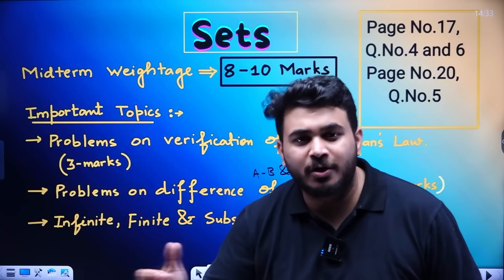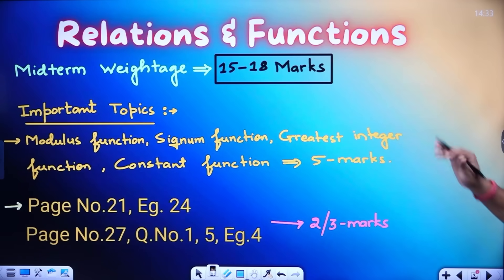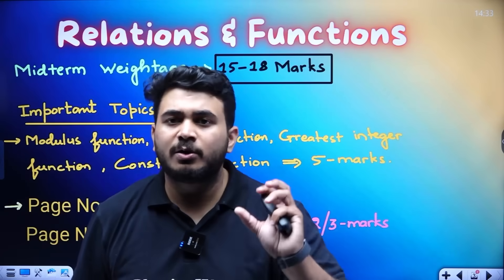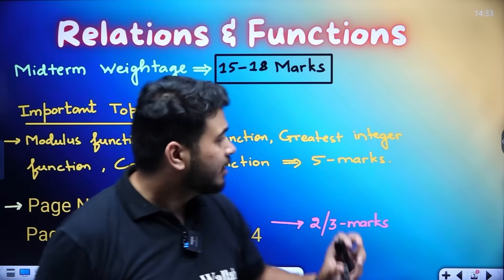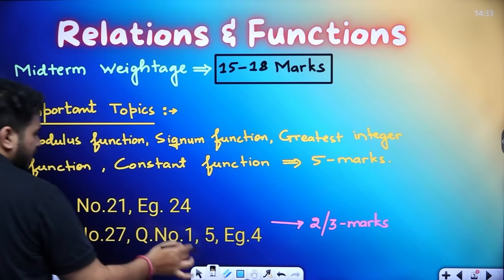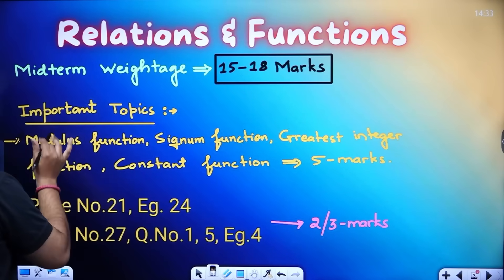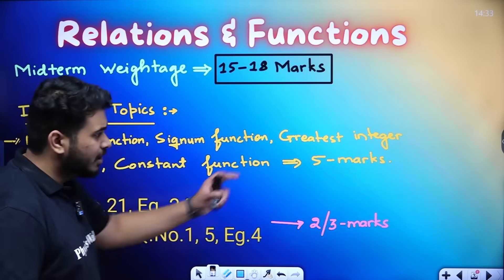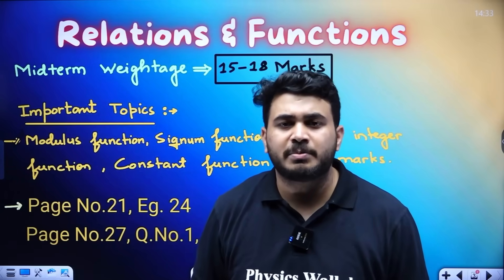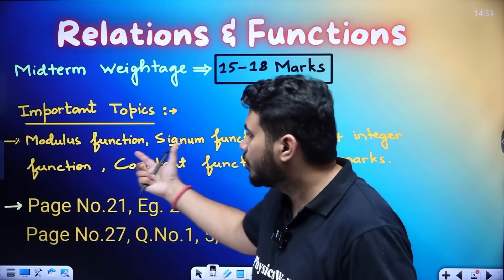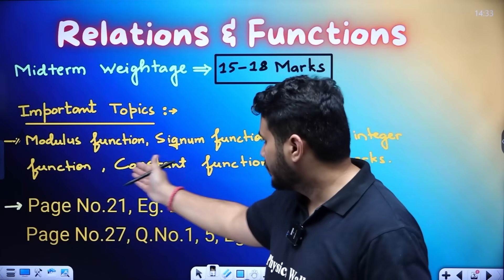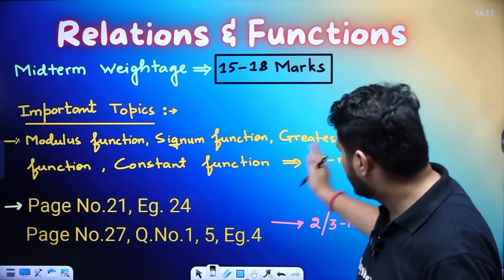Let us move further. If you look at students, relations and functions, midterm weightage, relations and functions, you can see a very important topic. So, the coverage of this, weightage of this is 15 to 18 marks. If you see important topics, modulus function, 100%. Modulus function, signum function, greatest integer function, constant function. 5 marks here are questions. 2 questions definitely will be there. You need to define modulus function, draw the graph of it, write domain and range. Whatever other top functions are there over here. 100% sure shot, you will get 5 marks question students.